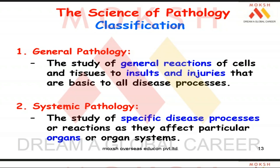General pathology is the study of general reactions of cells and tissues to insults and injuries — it is the fundamental concept, the foundation. You can build a Taj Mahal but if the foundation is weak it won't last. Emperor Shah Jahan spent three years building only the foundation of the Taj Mahal, and people asked when the actual building would start. He said the foundation is far more important than the building itself.